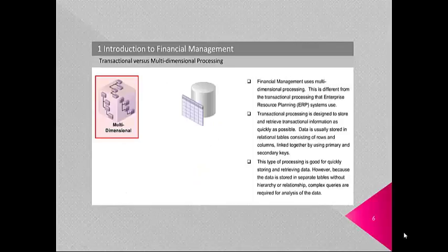Financial Management uses multi-dimensional processing. This is different from the transactional processing that enterprise resource planning (ERP) systems use. Transactional processing is designed to store and retrieve transactional information as quickly as possible. Data is usually stored in relational tables consisting of rows and columns linked by primary and secondary keys. However, because data is stored in separate tables without hierarchy or relationship, complex queries are required for analysis.